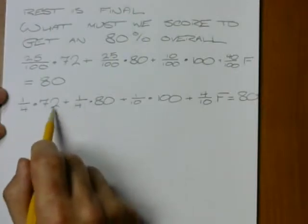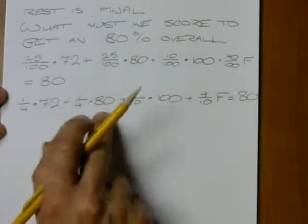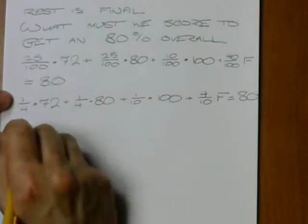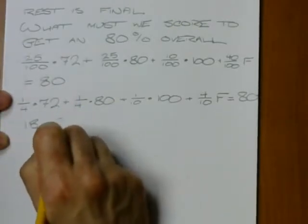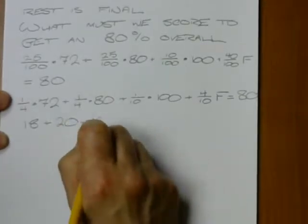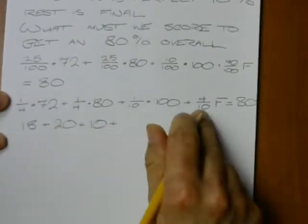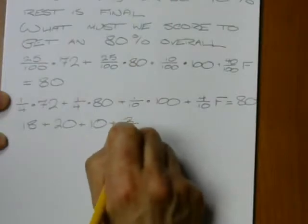A quarter of 72, well, since that would be like 4 and 4 taken from 80, right? So this would be 18, this would be 20, this would be 10, this would be 2 fifths F,